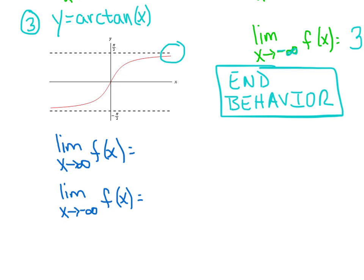So as x gets really, really huge, the graph is approaching a height of pi over 2. And then as x gets infinitely small, we'll call negative infinity here, the graph is approaching a height of negative pi over 2. So if nothing else today, I want you to become an expert on this graph right here and the endpoints and these limits.